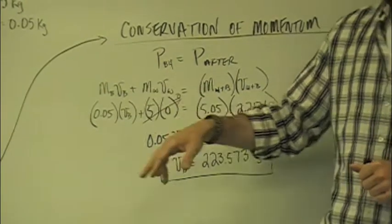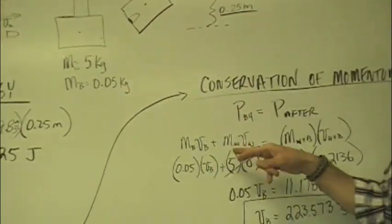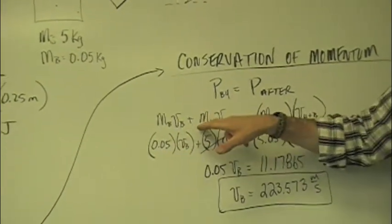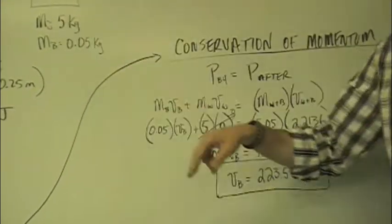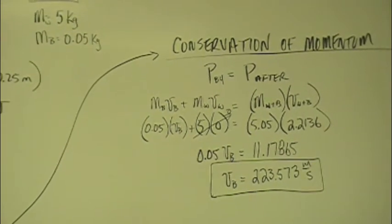And if we look at it, guys, before the collision, we have a bullet flying in and a wood block sitting there. So you'll notice I have the mass of the bullet times the velocity of the bullet. And then the mass of the wood times the velocity of the wood. But since the wood is stationary, its velocity is zero, which basically makes that term go away.